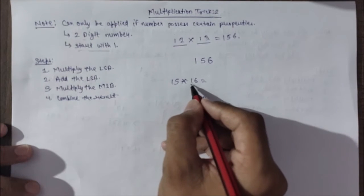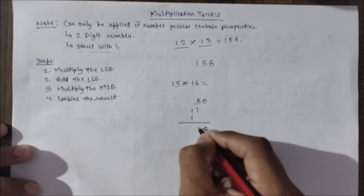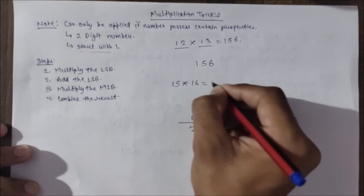And multiplying the MSB, that is 1. Combining all results: 0, 4, 2. That is 240.